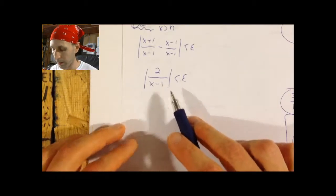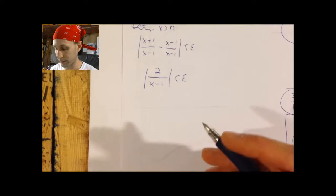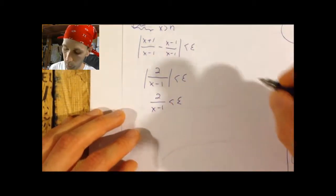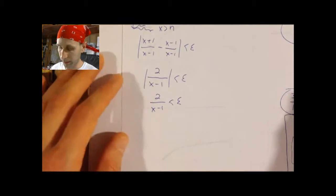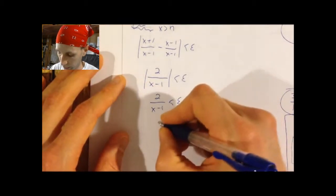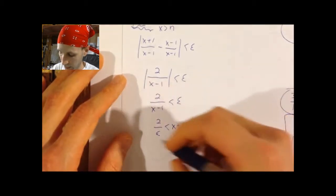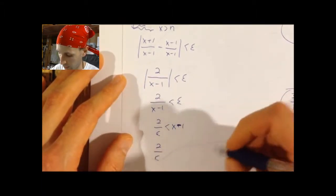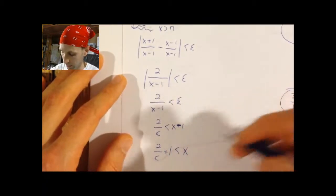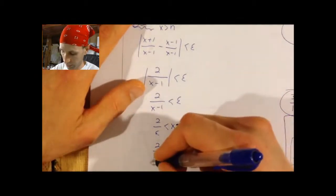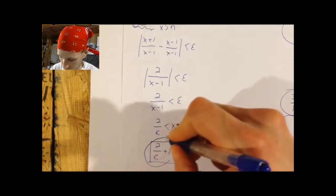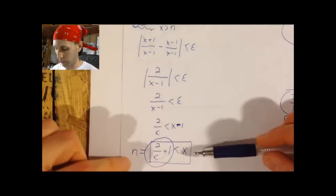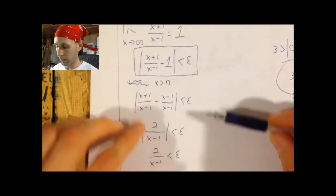We're assuming x is going to infinity, so we can safely assume x is greater than 1. At this point we can drop the absolute value bars. Then all I have to do is flip the fraction: 2 over epsilon is less than x minus 1. Bringing over the 1 gives 2 over epsilon plus 1 is less than x. So I'll let N equal 2 over epsilon plus 1. And if I let N equal that, then all these inequalities can be reversed and I'll end up with what I wanted to prove.